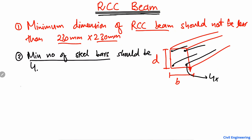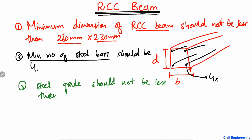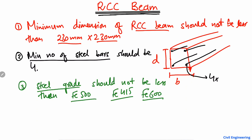The third point regards the steel grade. There are different grades of steel, but the steel grade used in an RCC beam should not be less than Fe500. For example, there is Fe415 and Fe600, but keep in mind your steel grade in an RCC beam should not be less than Fe500 when you design your beam.